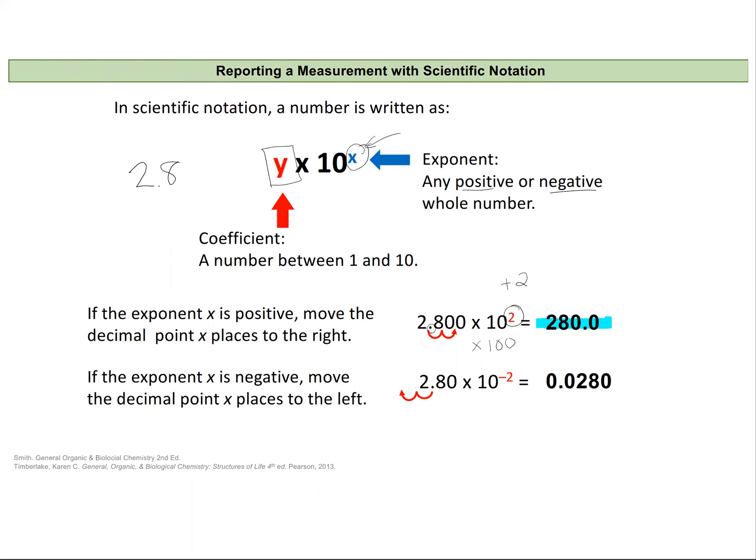If instead we had a negative 2 in our exponent, then we would be multiplying this by 0.01. Or we could think of moving our decimal place over two places to the left and have a value of 0.0280.